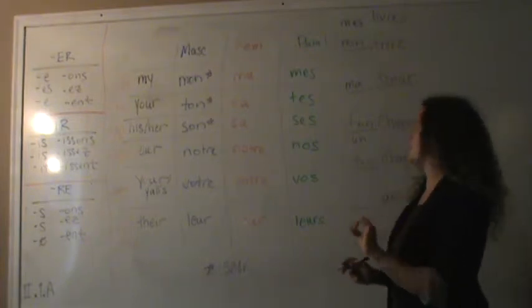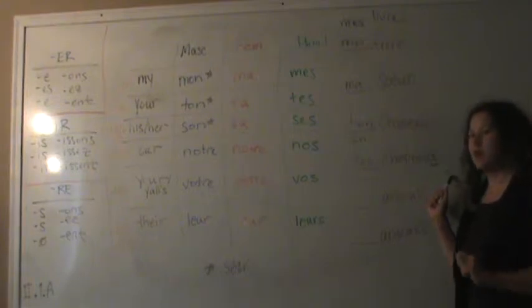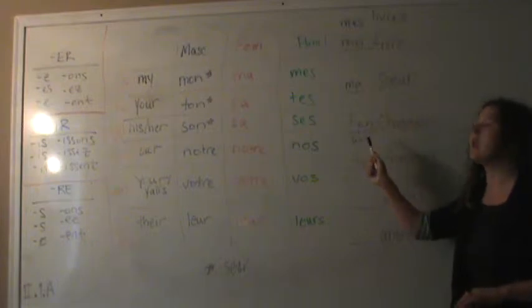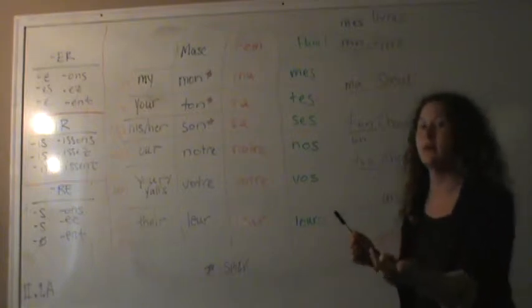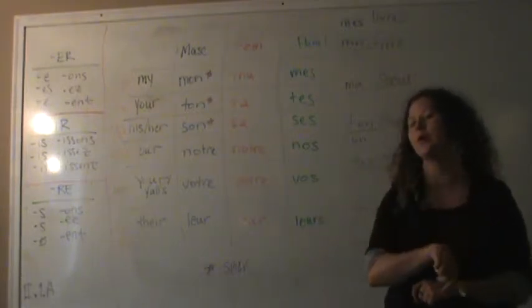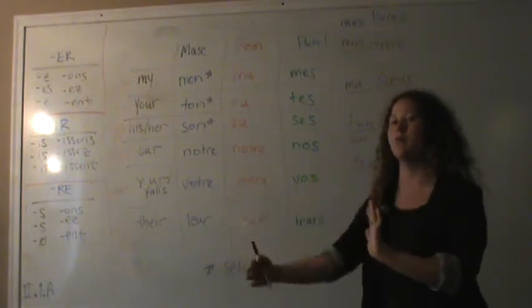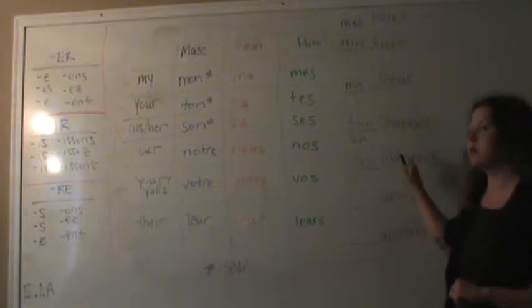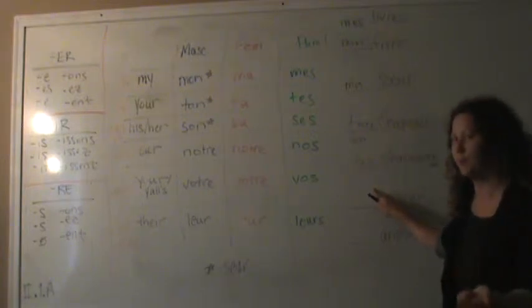This is really important also because you can't hear this X. The way that you listen for the plural is actually in the word before it, not at the end of it. In English, the book, the books. I hear that S at the end of books. In French, hearing the plural is actually the word before it. Listen. Ton, chapeau. Te, chapeau. Chapeau sounded the same. It was the ton that let me know it was singular or the te that let me know that it was plural.